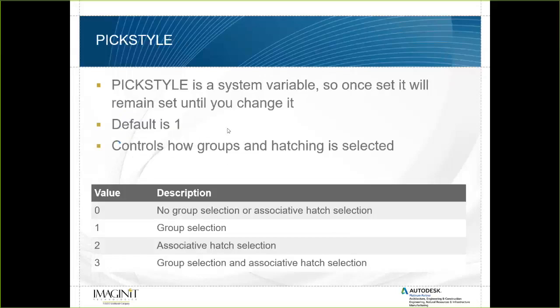First up is pick style — a system variable. Once you set it, it remains set until you change it. The default is one, and pick style controls how groups and hatching are selected. With the default of one, grouped items behave like a block. Set to two, it selects associative hatches — clicking will select not only the hatch but also the correct boundary. Three selects both groups and associated hatches. Set to zero, there is no group or associative hatch selection.